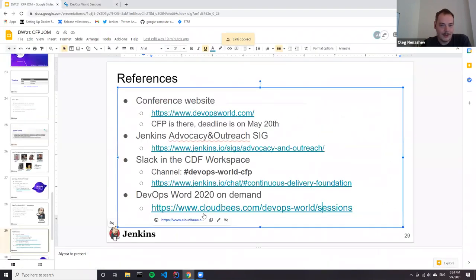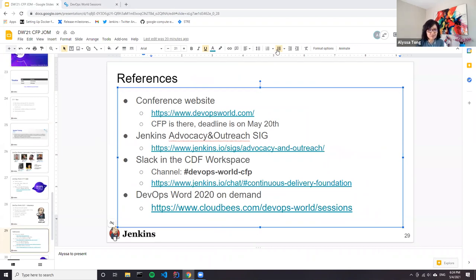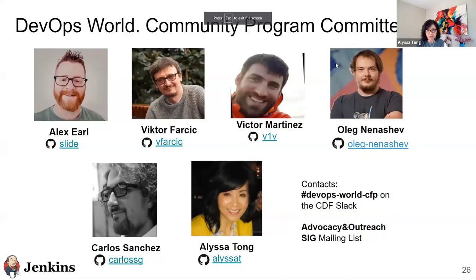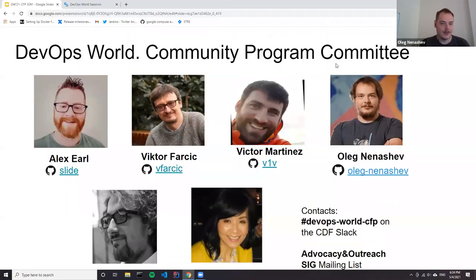I also want to give a shout out to our review committee — these are contributors within the Jenkins community volunteering their time to be part of this community program review. Thank you to them. If anybody else is interested in joining the review committee, please feel free to reach out via the Slack channel or the Advocacy and Outreach SIG.